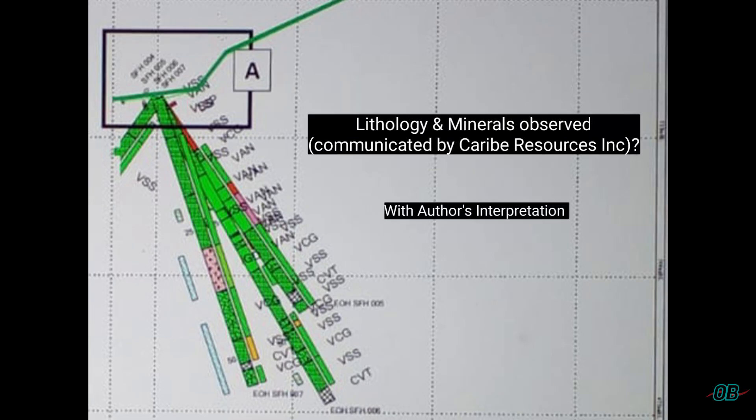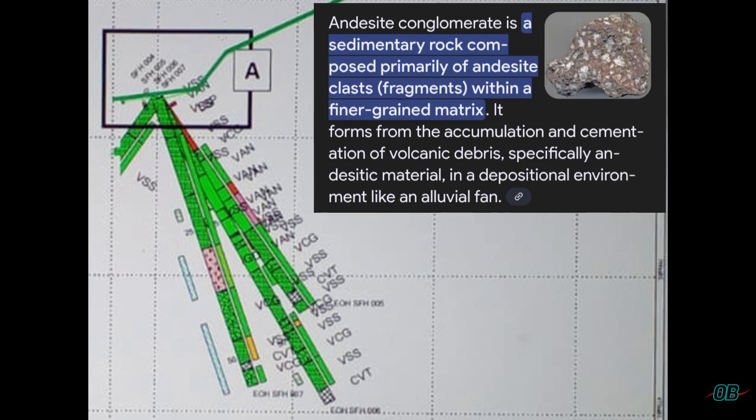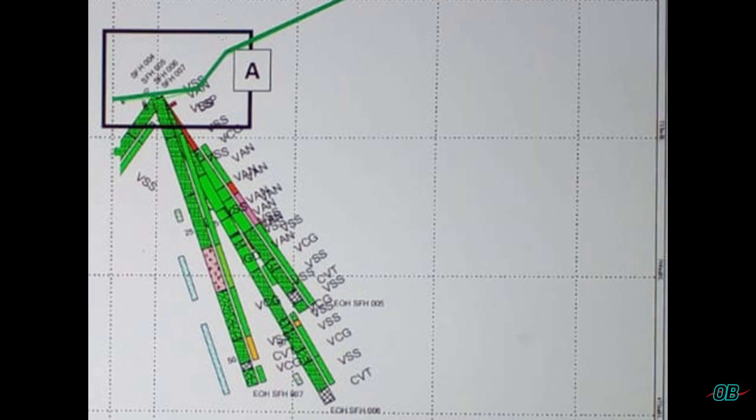Now, in terms of the lithology and the minerals observed, I'm keeping it very general. So, as I went through the data, andesitic conglomerates were expressed, and these can be observed or understood as sedimentary rocks that compose of primary andesites. And basically, they would have been pre-existing and reworked and deposited as a result of agents such as water.